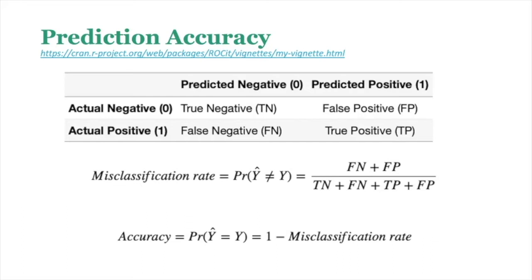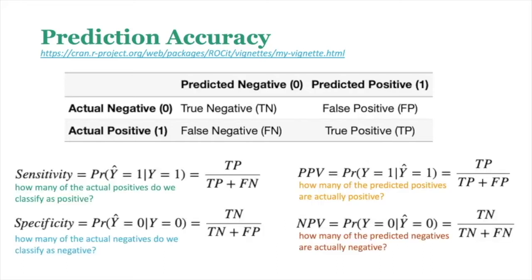The misclassification rate sums all times the model is wrong divided by the total. Accuracy is one minus the misclassification rate — all correct predictions divided by everything. In addition, we have sensitivity, specificity, positive predictive value, and negative predictive value.